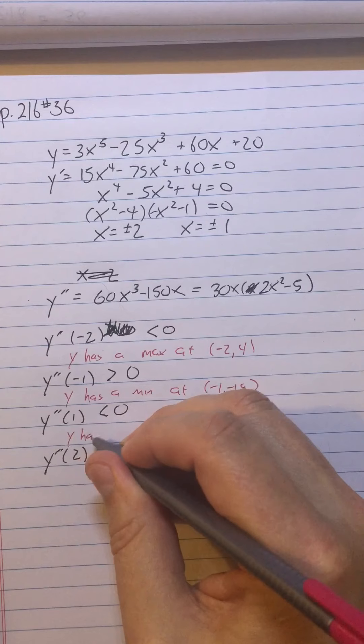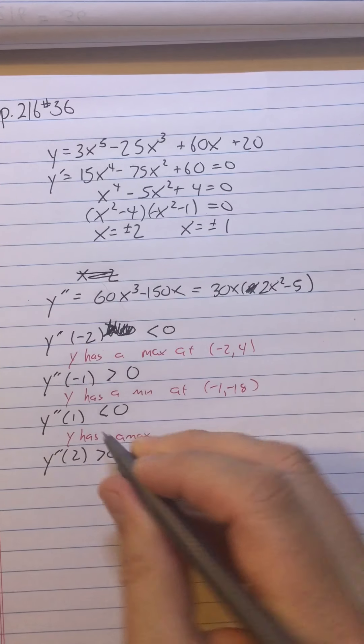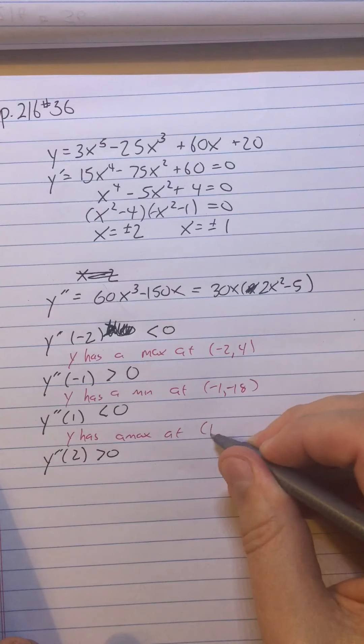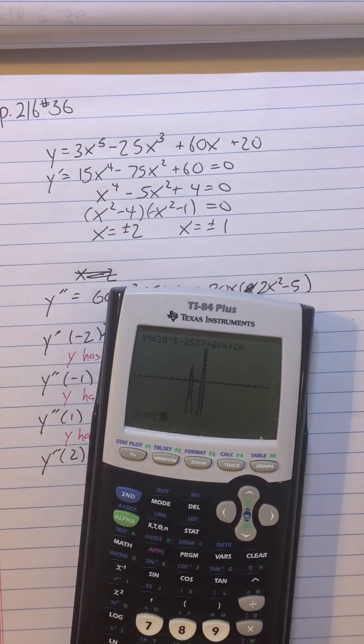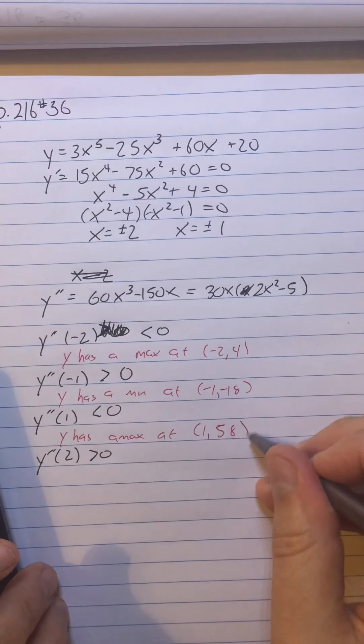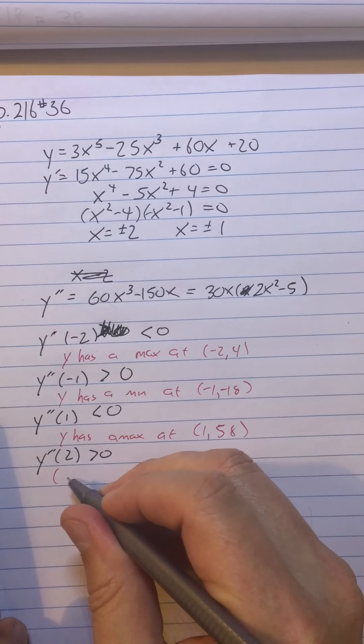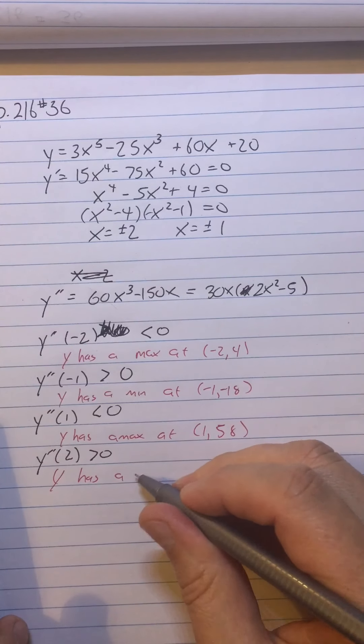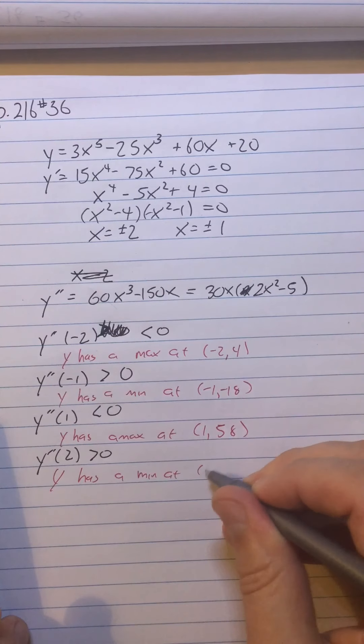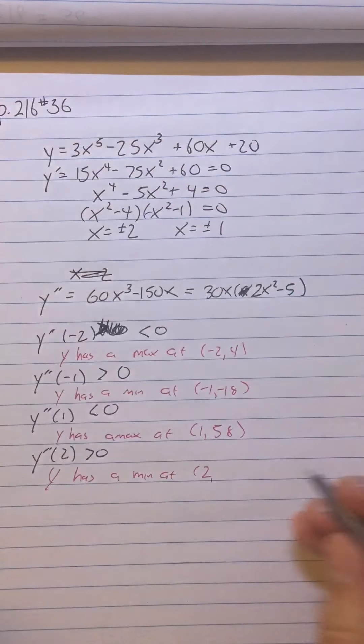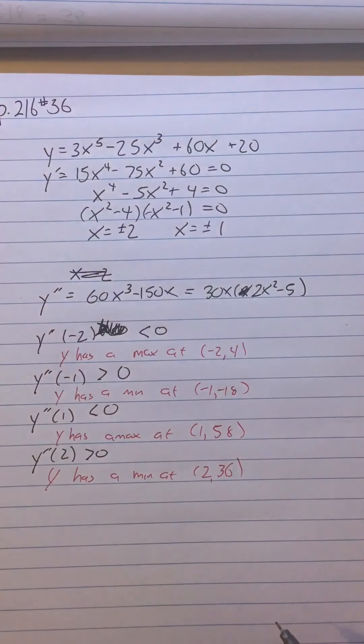And y has a max because y'' is less than zero at 1. So we'll put in 1. I got 58. And y of 2. So y has a min at 2. So just hit 2 there. And I get 36.